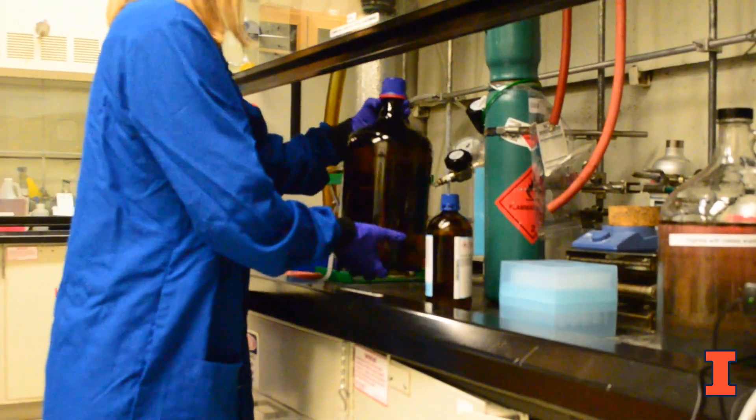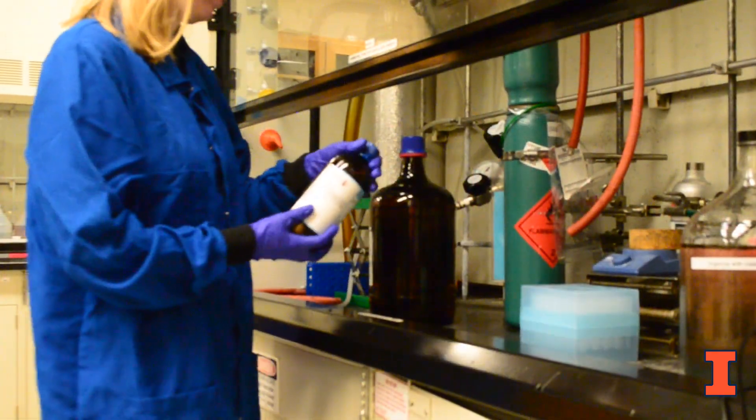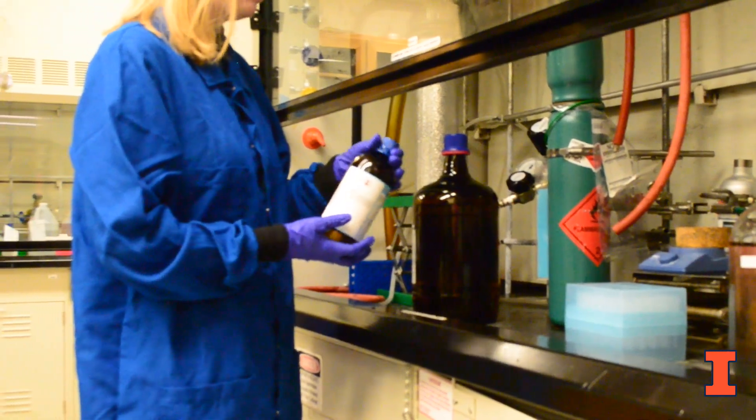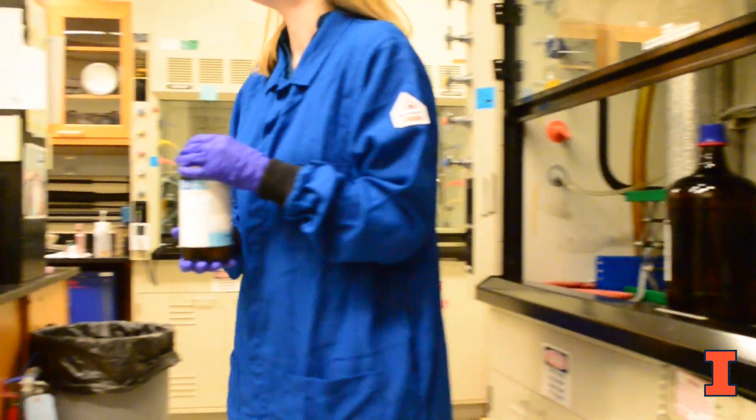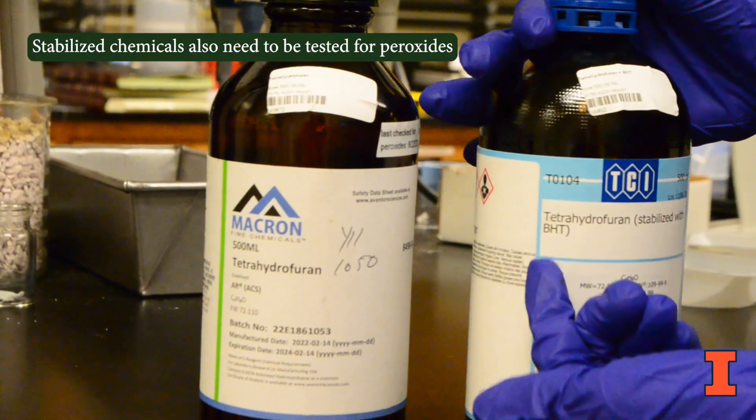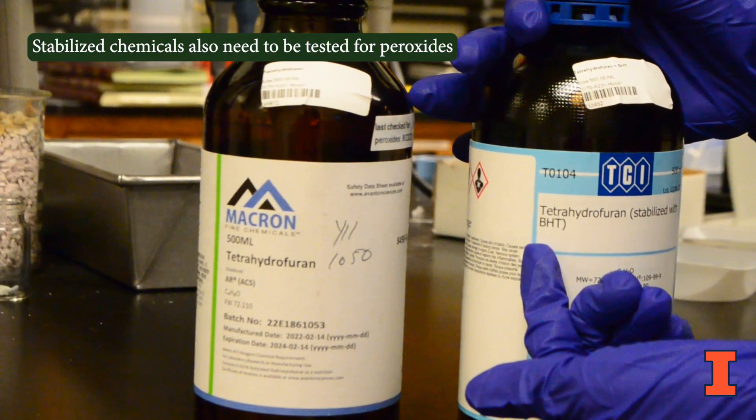Buying smaller quantities of these chemicals that will be used up quickly is another way to manage the hazard. Some peroxide forming chemicals are also available to be purchased with inhibitors or stabilizers added to them.